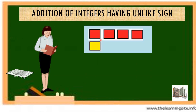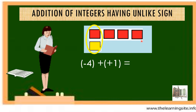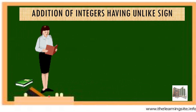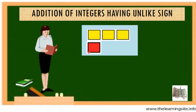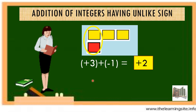Negative 4 plus positive 1: adding 1 minus 1 gives 0, so the answer is negative 3. For positive 3 plus negative 1: 1 minus 1 is 0, so the result is positive 2.